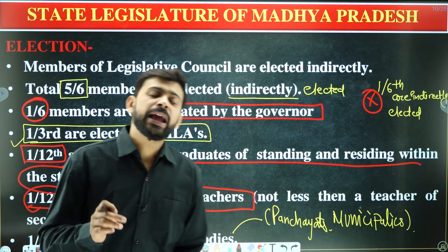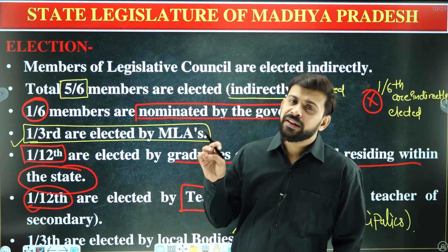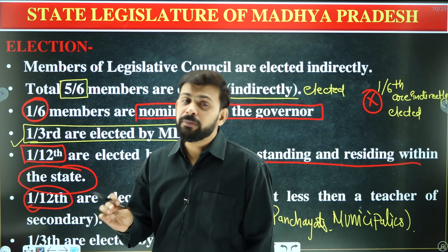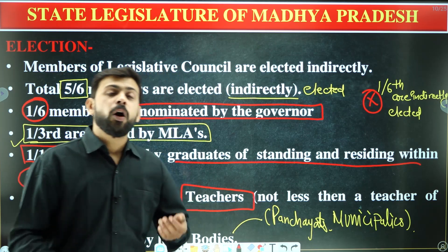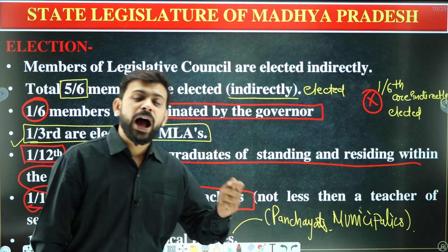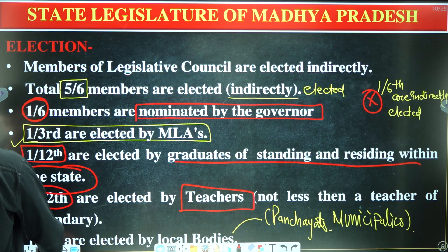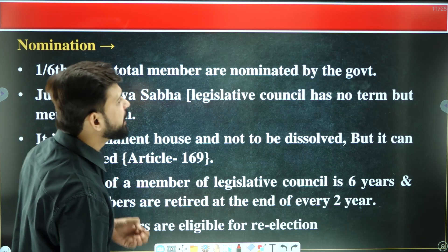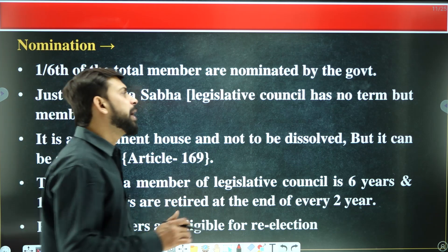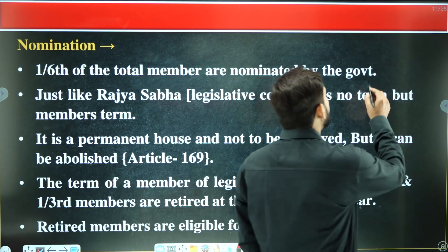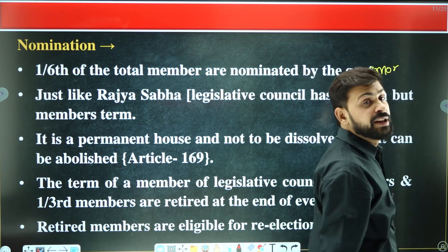One-twelfth are graduates standing and residing within the state. One-twelfth are elected by teachers who must be from higher secondary school or above. The one-sixth nominated members — this is decided by the Governor, not the government. Just like the Rajya Sabha, the legislative council has no fixed term for the house itself.